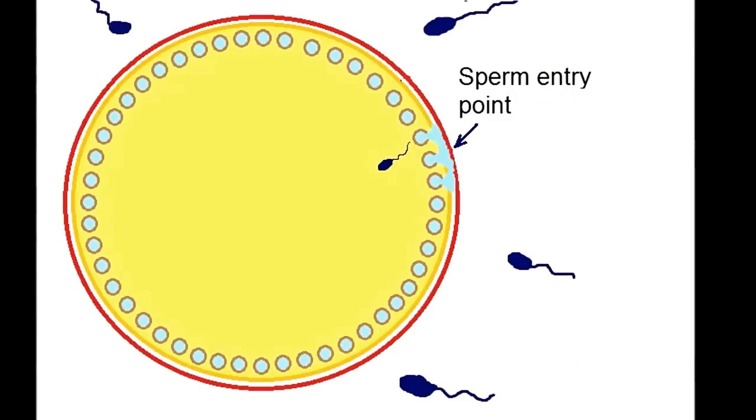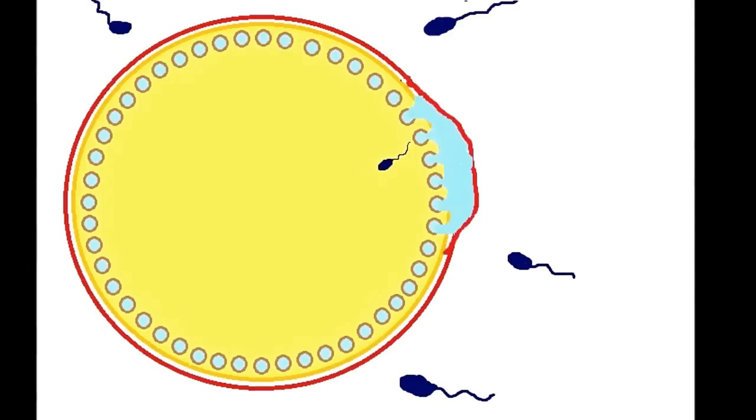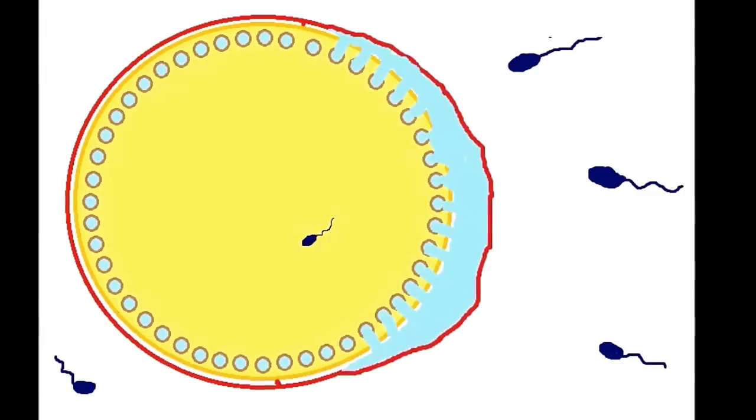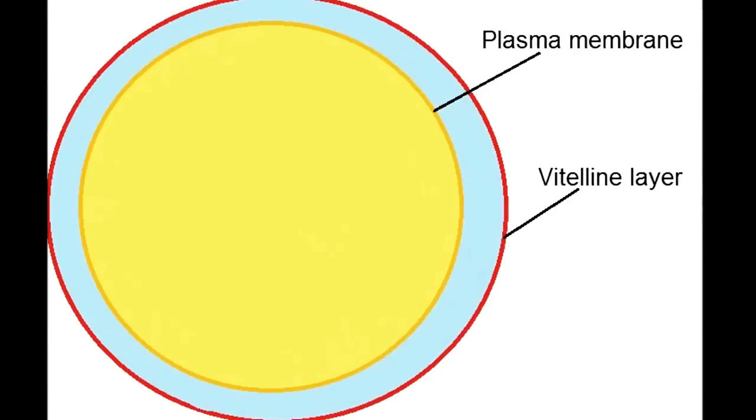This triggers a chain reaction. More and more granules fuse with the plasma membrane and the vitelline layer begins to balloon over the membrane. This event spreads further and further until the vitelline layer balloons around the fertilized egg and the embryo begins to develop.